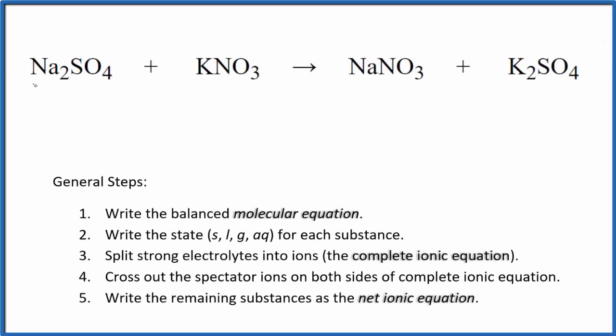Let's take a look at the net ionic equation for Na2SO4 plus KNO3. This is sodium sulfate and potassium nitrate. First thing we need to do when we write net ionic equations is balance the molecular equation. This is the molecular equation.